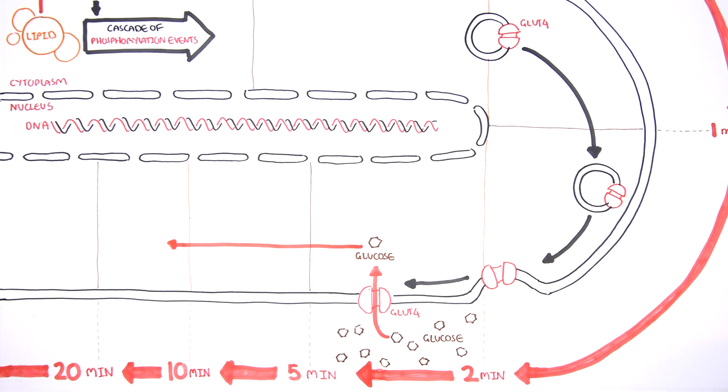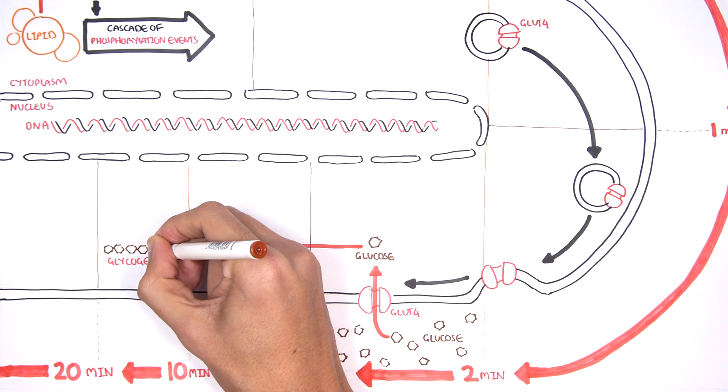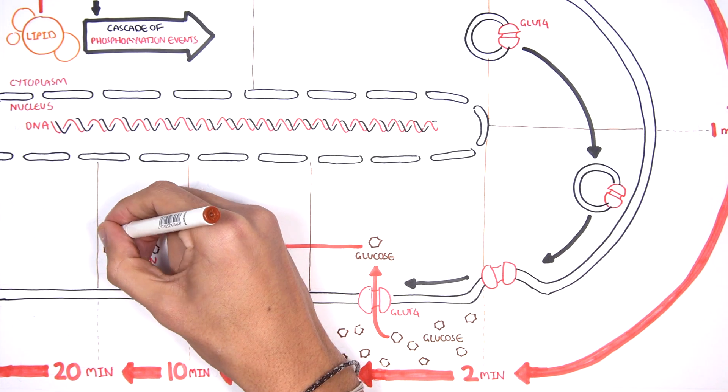By 20 minutes, the cascade of phosphorylation events stimulates glucose storage. This is done by storing glucose as glycogen through glycogenesis.